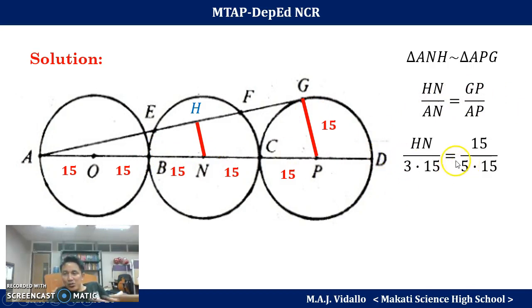Instead of doing that, let me do it this way. You're just going to cancel them. Again, HN over 3 times 15 is equal to 15 over 5 times 15. Clearly, I can easily cancel 15 here. At the same time, I can cancel this one and that gives me 3. I have 3 here, so therefore HN is equal to 9.